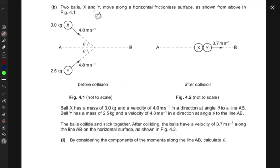Now, the next part says two balls X and Y move along a horizontal frictionless surface as shown from above. There are two balls moving along a horizontal surface. This one is coming at an angle, this one is also coming at the same angle. This has velocity 4, this has 4.8, and these are the corresponding masses. This is before collision.